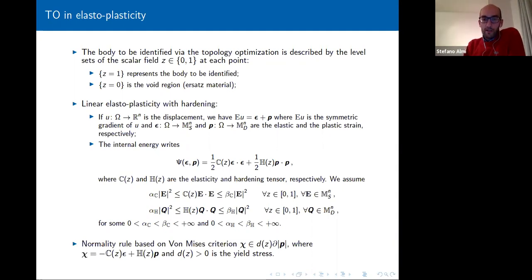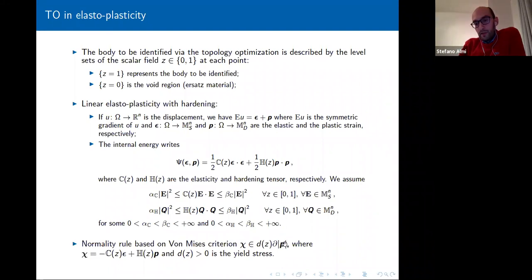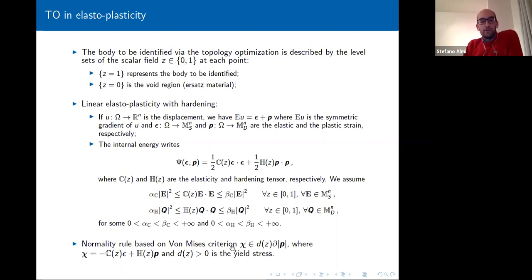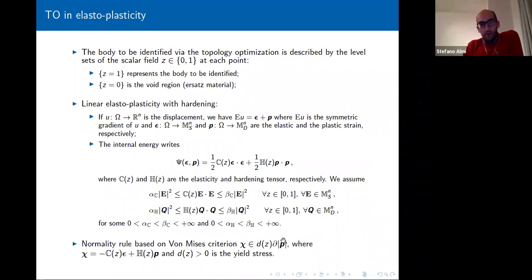We assume C and H are both positive definite, bounded away from zero uniformly with respect to z in the interval [0,1] — already preparing hypotheses for the phase field model. In the void region, C and H would be zero, but with the ersatz material assumption, we ensure we are never singular in omega. We also consider a normality rule — the von Mises criterion — so the thermodynamic force associated to p must lie in the subdifferential of the modulus of p, and the yield stress d(z) is positive and uniform with respect to z.